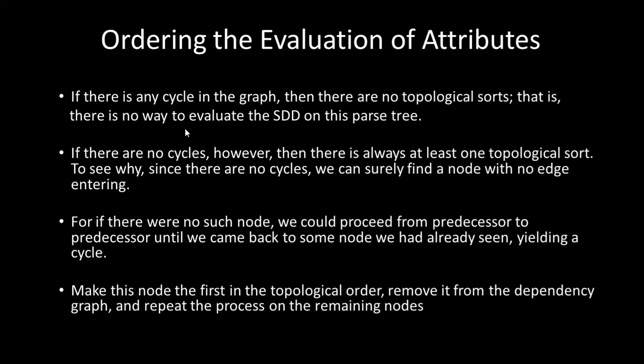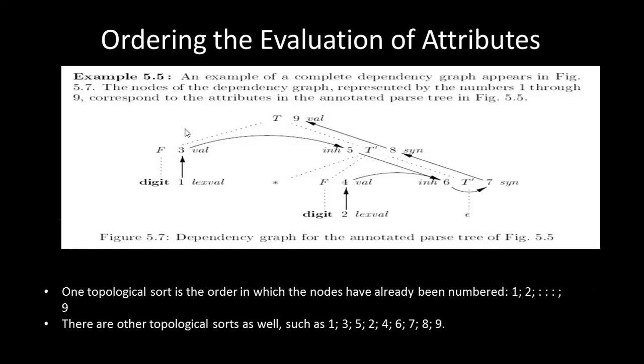If there were no such a node, we could proceed from node to node until we came back to a node we had already seen, ending in a cycle. To break the cycle: make the first node in the topological order, remove it from the dependency graph, and repeat the process on the remaining node set.